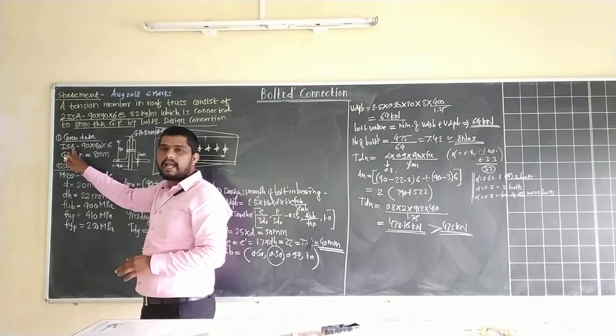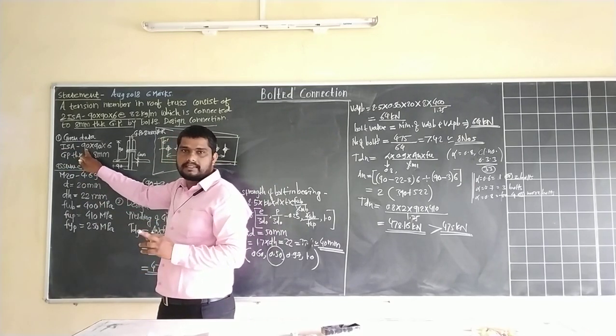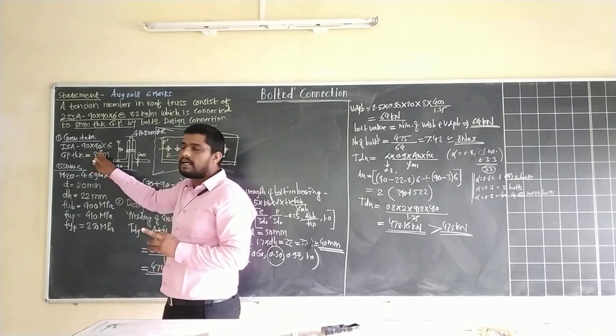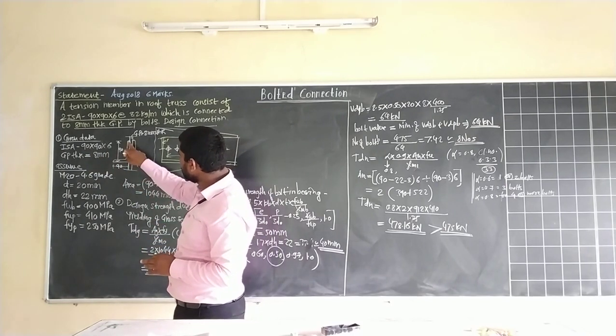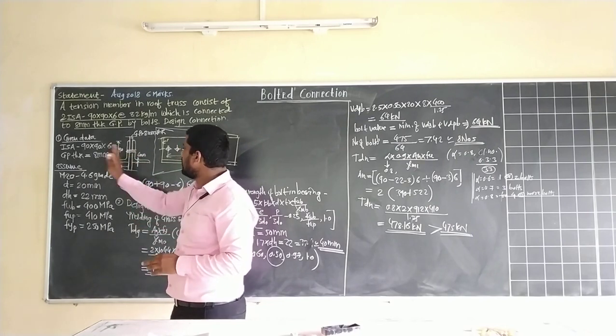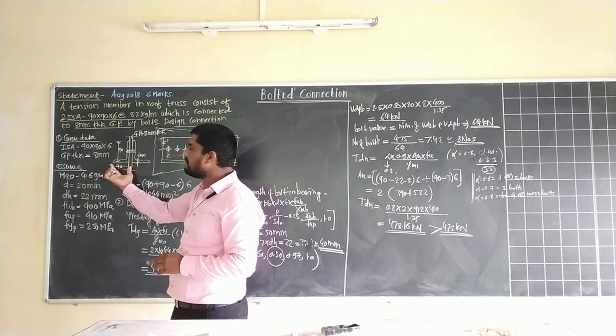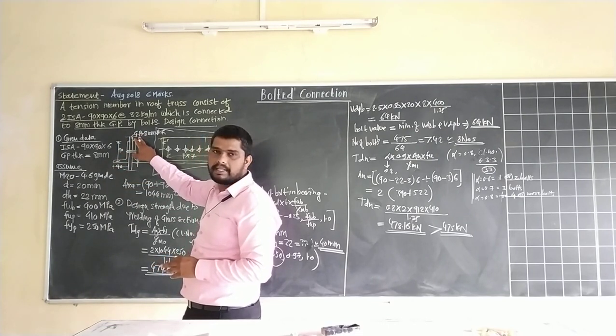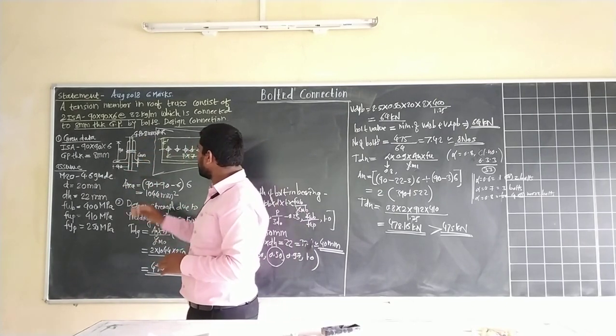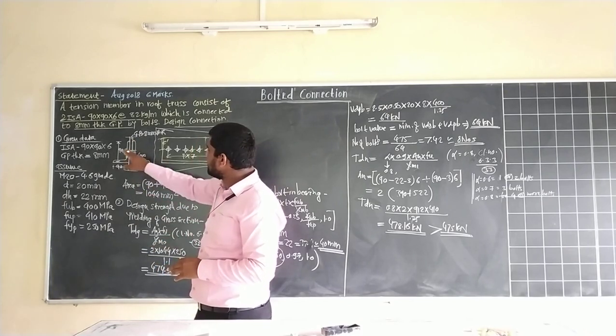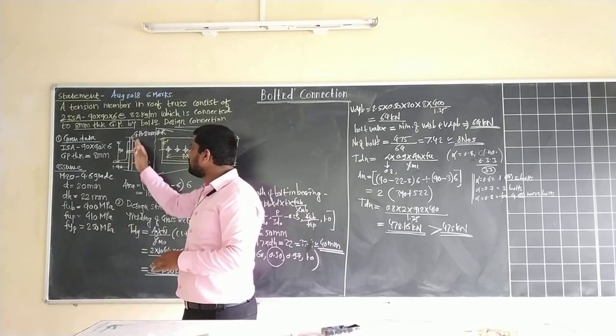ISA Indian standard angle section is equal angle section because one leg is 90 mm multiplied by another leg B which is also 90 mm by 6 mm thickness. One angle section is placed on either side, 90 mm is leg A, 90 mm is leg B, connected by gusset plate 8 mm thickness. Another same dimension angle section is placed in opposite direction on another side of the gusset plate.